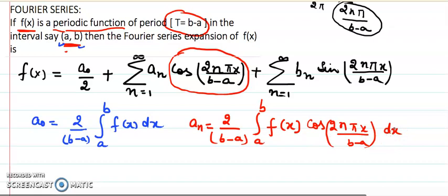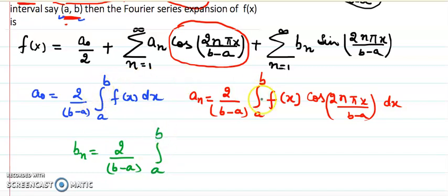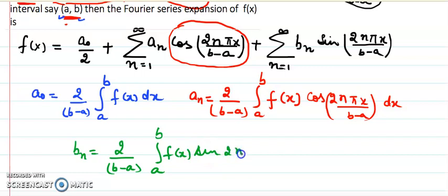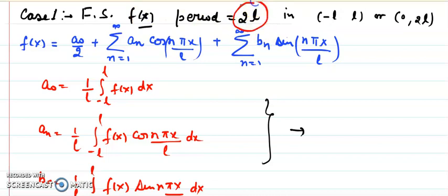Similarly, bₙ equals 2/(b−a) times the integral from a to b of f(x) sin(2nπx/(b−a)) dx. All these coefficients are integrated over the same interval given in the problem. Note that bₙ involves sine and aₙ involves cosine. By remembering this general framework, we can write the Fourier series of any function. Now let's look at the first specific case: where the period is 2L.